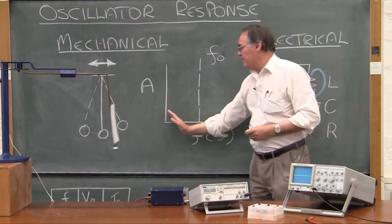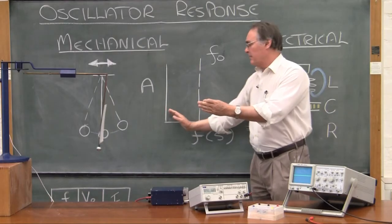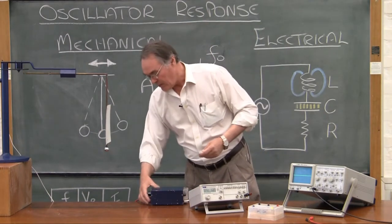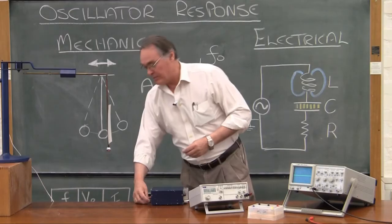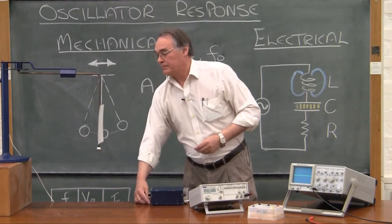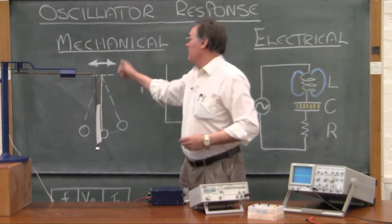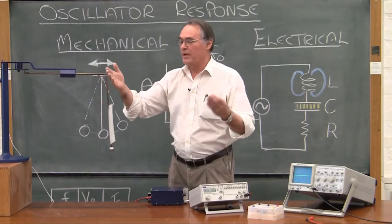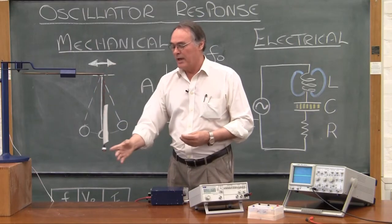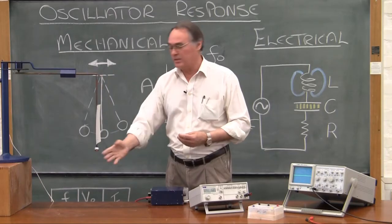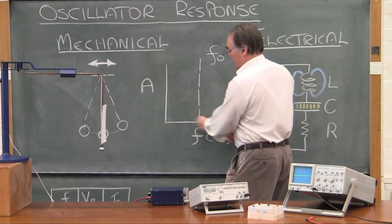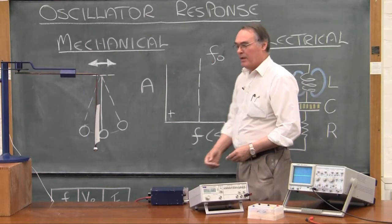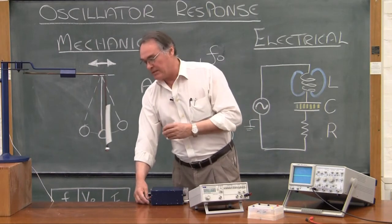I'm first going to drive it at some low frequency and have a look at the response, then increase and see the whole range of responses. You can see I'm driving the pivot point backwards and forwards really slowly, well below the resonant frequency, and we see that the response — the oscillation — is quite small. So at a low frequency, the response is small.